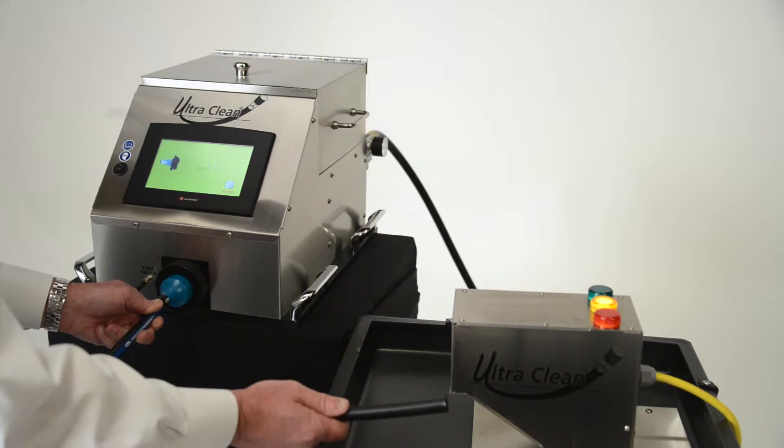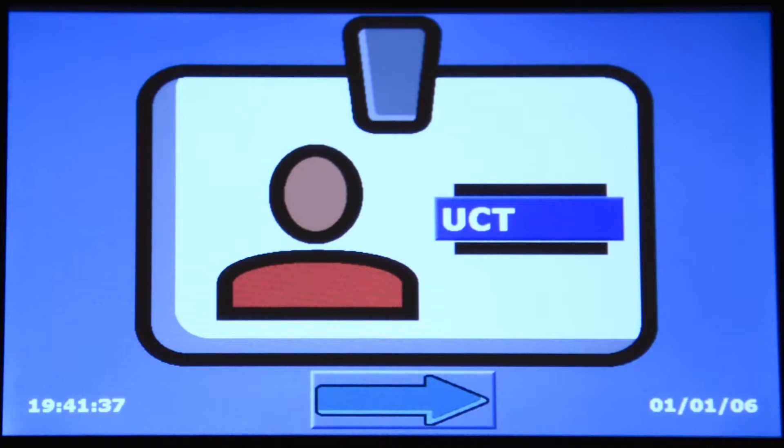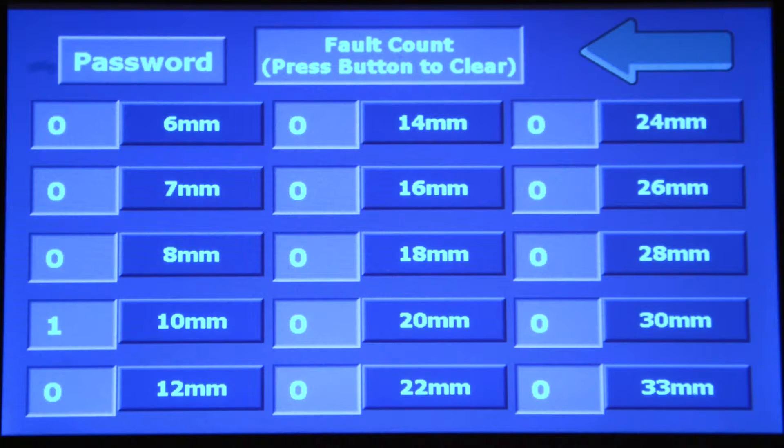It also includes a fault mode to ensure that a projectile is never left in a hose or tube by mistake. System operator ID, projectile sizes, projectile verification, and all system faults are logged during operation.